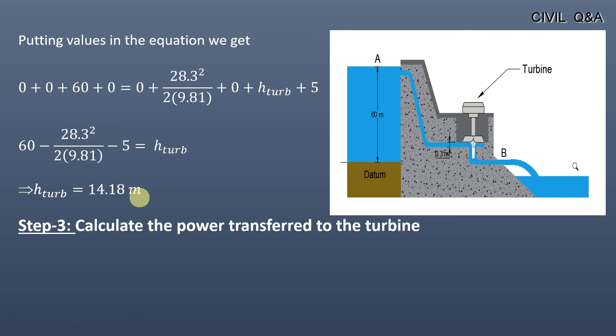In step third, we will calculate the power transferred to the turbine. As we know, power transferred to the turbine is given as P equals γ times Q times head of turbine.